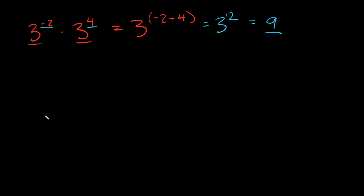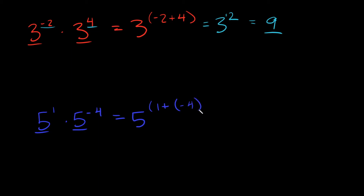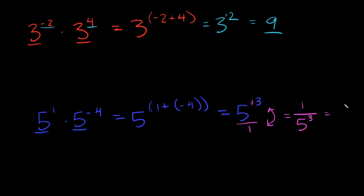Next example: 5 to the first power times 5 to the negative 4. Keep the base of 5 and add the exponents: 1 plus negative 4 equals negative 3. So we have 5 to the negative 3. With a negative exponent, put it over 1 and flip it to make the exponent positive — that gives us 1 over 5 to the positive 3, which equals 1 over 125.